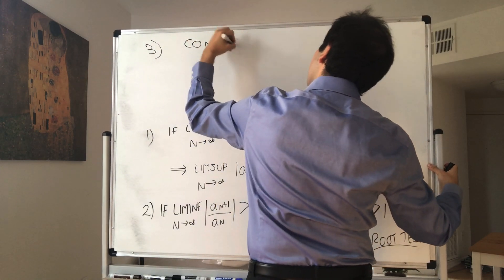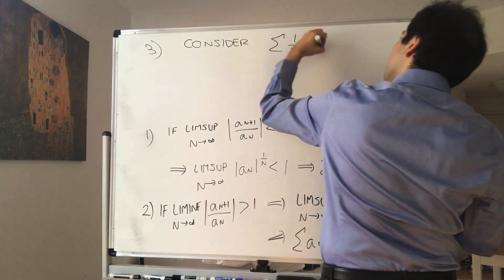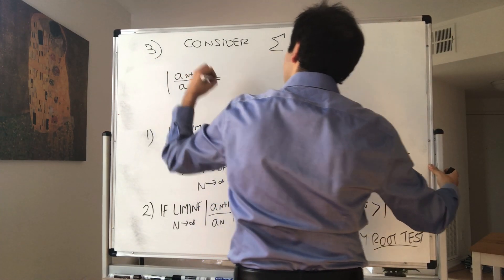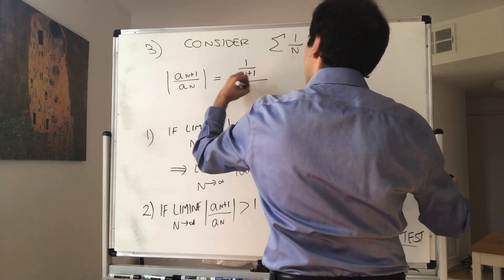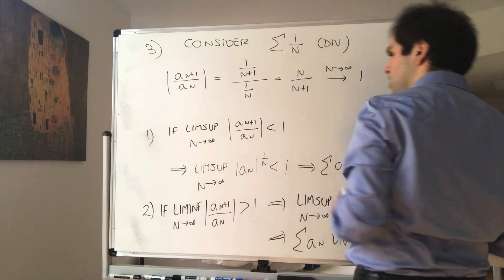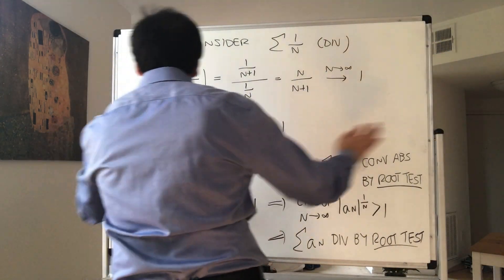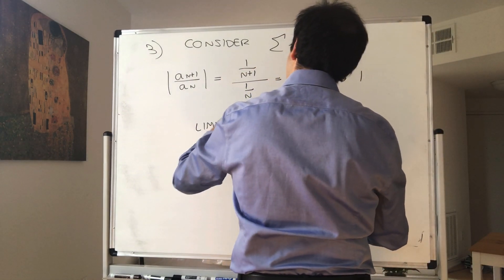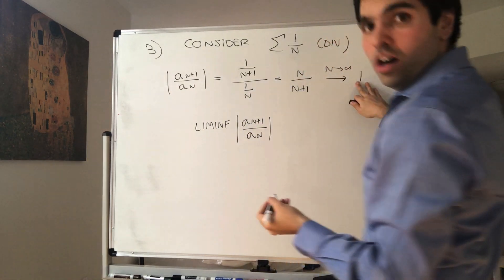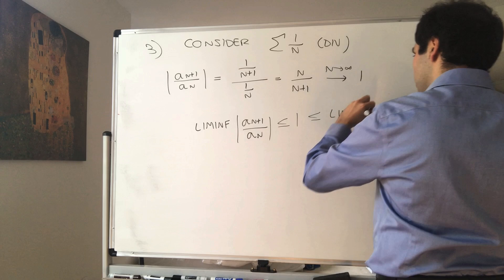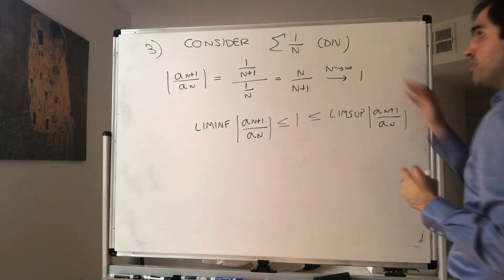Last but not least, what about inconclusiveness? Consider the harmonic series, which diverges. In that case, a_{n+1}/a_n becomes (1/(n+1)) divided by (1/n), which equals n/(n+1), which converges to 1. So the lim inf of a_{n+1}/a_n equals 1, which is less than or equal to 1, and less than or equal to the lim sup of the ratios. Yet, the harmonic series diverges.